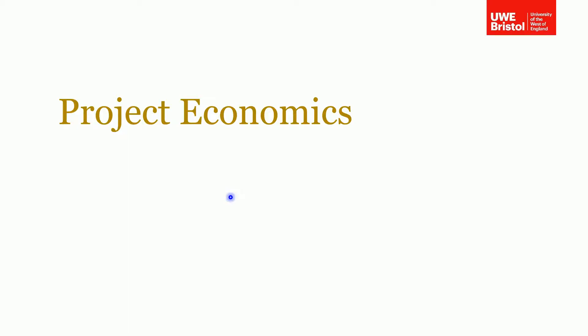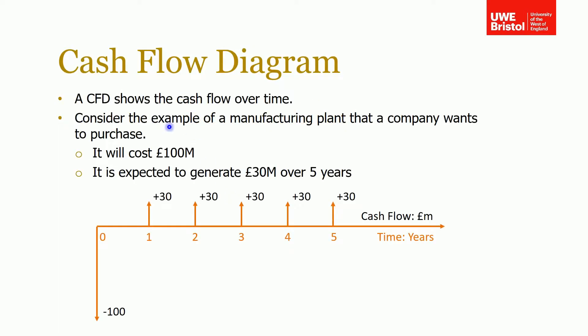In this section I'm going to talk about project economics — the different metrics that you can use to work out whether a particular project that you're planning to start will be profitable or not, and how you can determine that. The simplest way to consider the income throughout the lifetime of a project is what's called a cash flow diagram, and there's an example of one here.